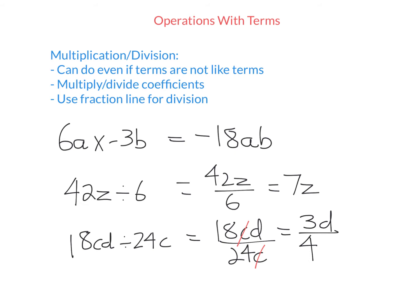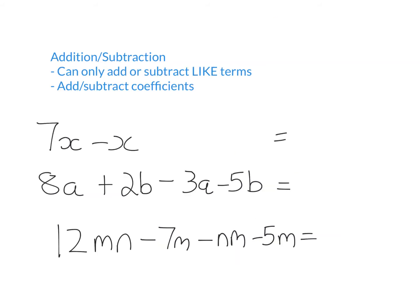Let's look at adding and subtracting. Adding and subtracting terms is a little more difficult because you can only add or subtract if they're like terms. Terms are like terms if they have the same pronumerals — the same sequence of letters. When you're adding or subtracting like terms, you just add or subtract the coefficients. So 7x minus x: these two terms are like terms. They both have an x. Now x is the same as 1x because multiplying something by 1 doesn't change its value. So I just go 7 minus 1, subtract the coefficients, and get 6x.